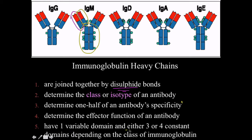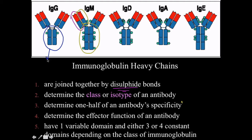Heavy chains have one variable domain and either three or four constant domains depending on the class of immunoglobulin. As a key point: all IgG molecules have the same Fc fragment — the same heavy constant regions. If you took a million IgG antibodies from the bloodstream, they would all have the same Fc fragment; the only variable part between them would be the actual antigen binding site.